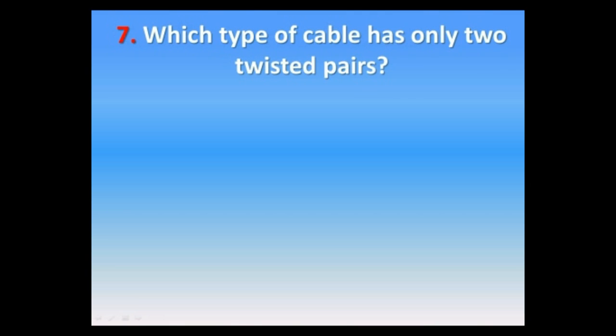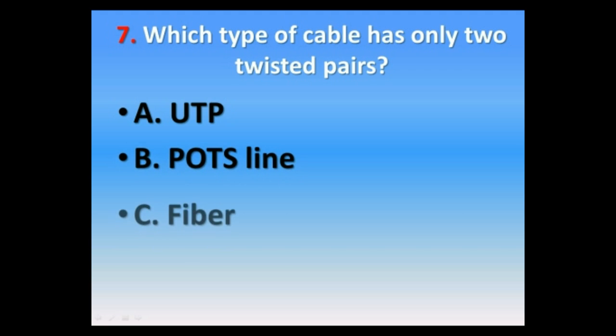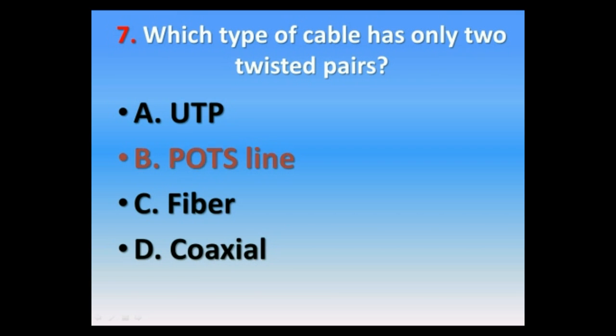Question number seven. Which type of cable has only two twisted pairs? A. UTP, B. POTS line, C. Fiber, D. Coaxial. The correct answer is B. POTS line.